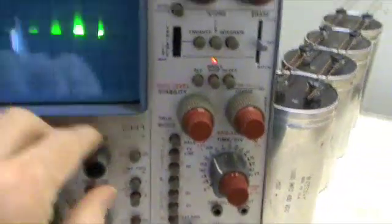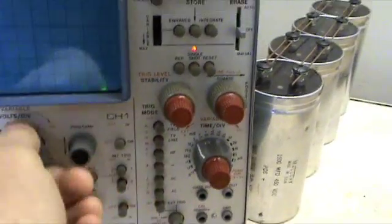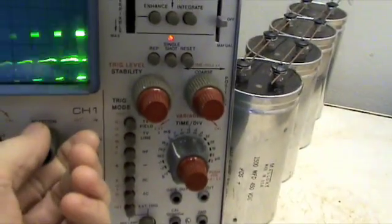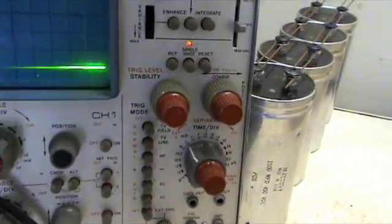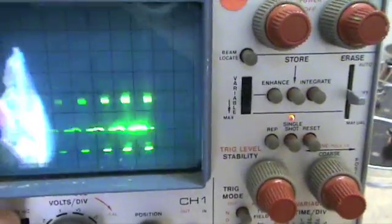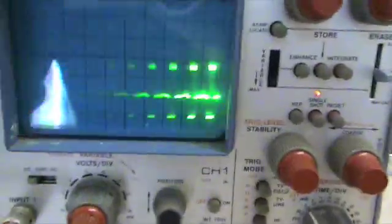Set the scope up a little bit better. I'm now on 20 volts per division. Set my ground down there. Lee tells me that this is DC.